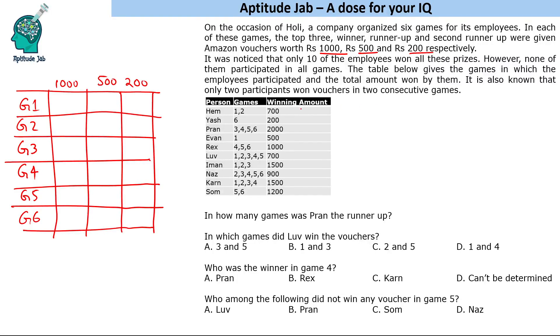We should always start with extreme values. Yes participated in only one game and won 200 rupees, so in G6, Yes came third. We are done with one player.